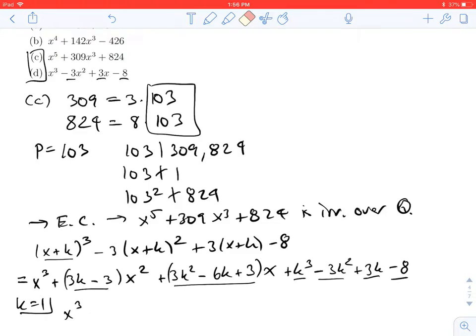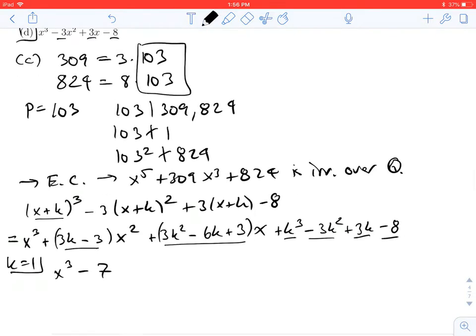We can use Eisenstein's criterion on this. If we let p equal 7, then Eisenstein's criterion implies x^3 - 7 is irreducible over Q.